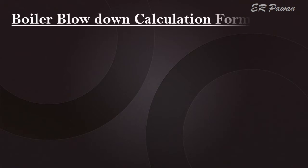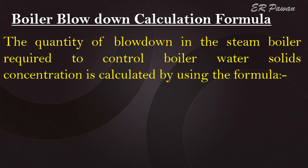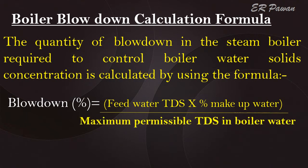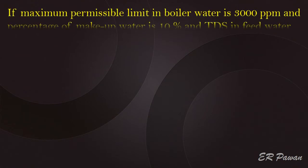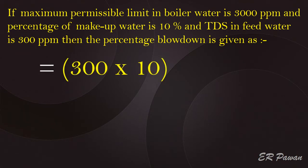Now let us understand the boiler blowdown calculation formula. The quantity of blowdown required to control boiler water solids concentration is calculated using the formula: Blowdown percentage = (Feed water TDS × Percentage of make-up water) ÷ Maximum permissible TDS in boiler water. Example: If the maximum permissible limit in boiler water is 3000 ppm, percentage of make-up water is 10%, and TDS in feed water is 300 ppm, then blowdown percentage = (300 × 10) ÷ 3000 = 1%.